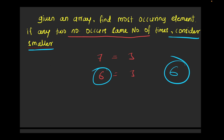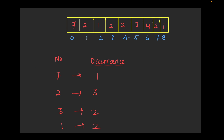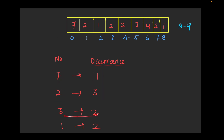Now let's look at some sample test cases for clarity. In a sample array of size 9: 7 has occurred 1 time, 2 has occurred 3 times, 3 has occurred 2 times, and 1 has occurred 2 times. The number that occurred the most is 2, so our final answer is 2.